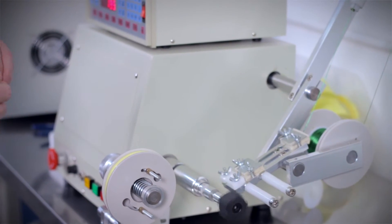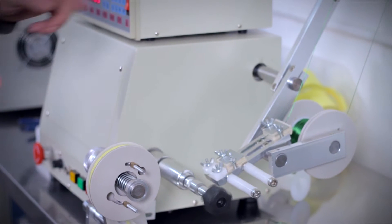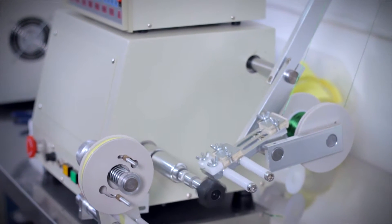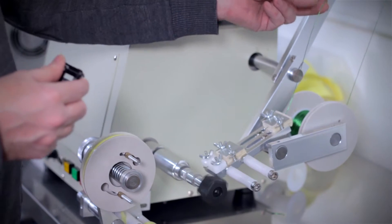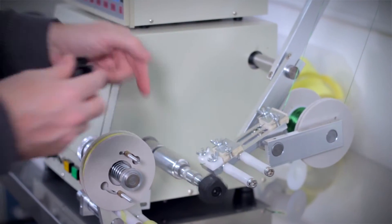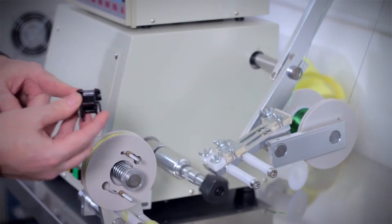You can see that this is basically a lathe with a wire wrapping tool on the front of it. We have our wire here that's going to be pulled through and then wrapped onto our core once I put it on the machine.